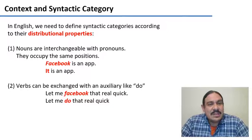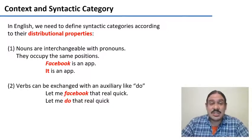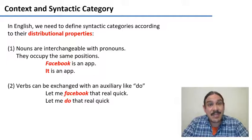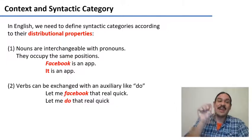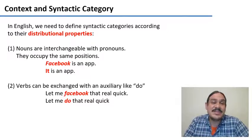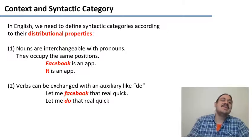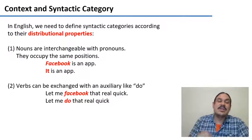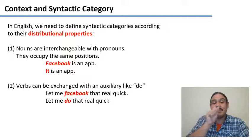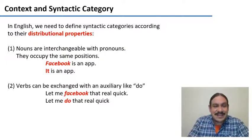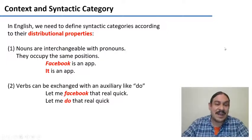For example, you can identify a noun if you can exchange it for a pronoun. In the sentence 'Facebook is an app,' you can exchange 'Facebook' for 'it': 'It is an app' — and the sentence still works. So we know Facebook is functioning as a noun in that sentence. On the other hand, in 'Let me Facebook that real quick,' you can know it's a verb because you can replace it with the auxiliary 'do': 'Let me do that real quick.' The sentence still works, so we know that in the second example, Facebook was functioning as a verb.